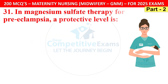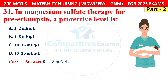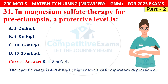Question 31: In magnesium sulfate therapy for pre-eclampsia, the therapeutic level is? Options are 1–2, 4–8, 10–12, or 15–20 mEq per litre. The correct answer is B — 4–8 mEq per litre. Higher levels risk respiratory depression or loss of reflexes.